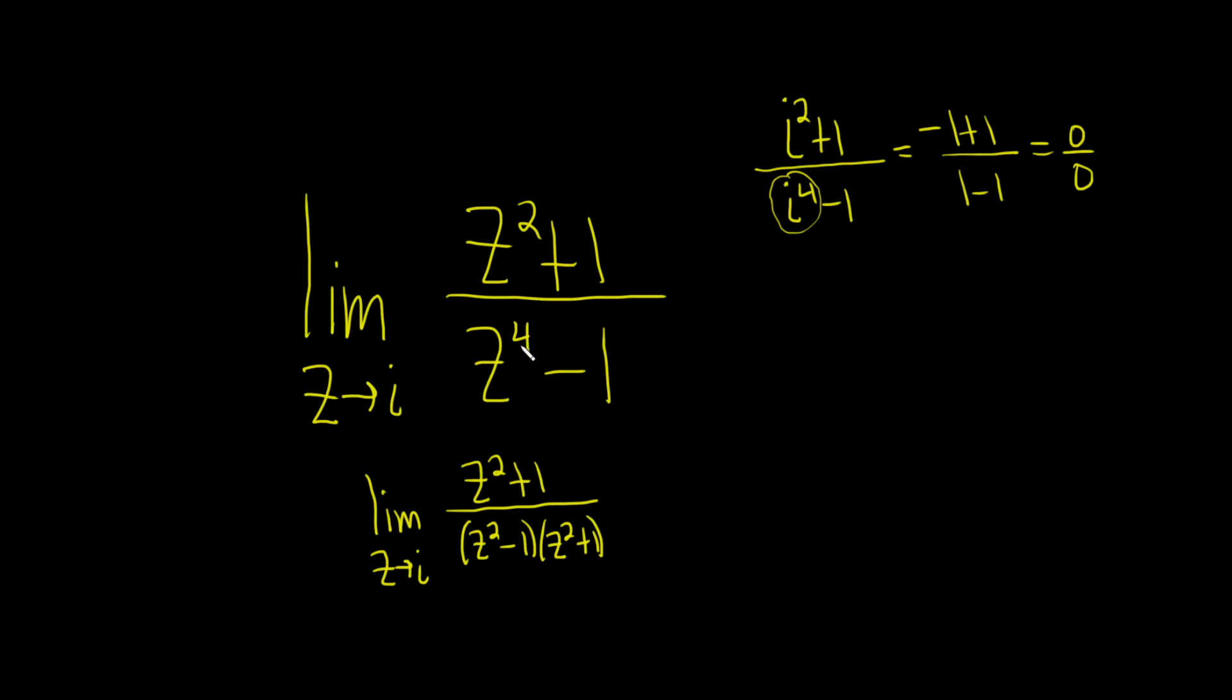It's the difference of squares with z to the fourth, because you could think of it like z squared squared minus 1. So this is your a, and this is your b.